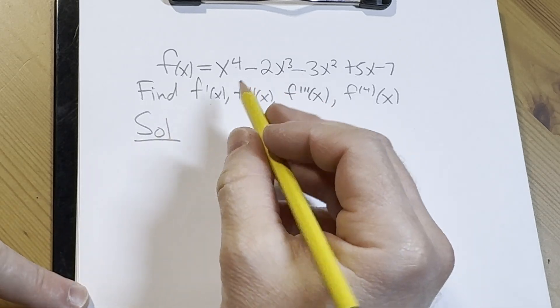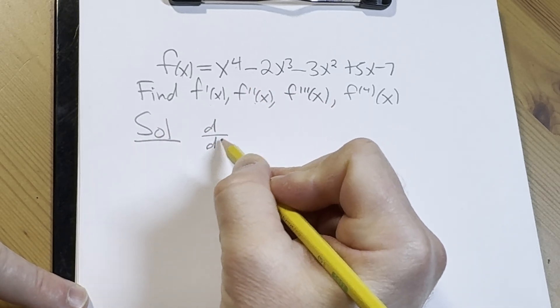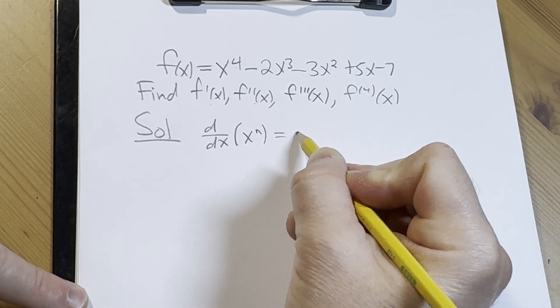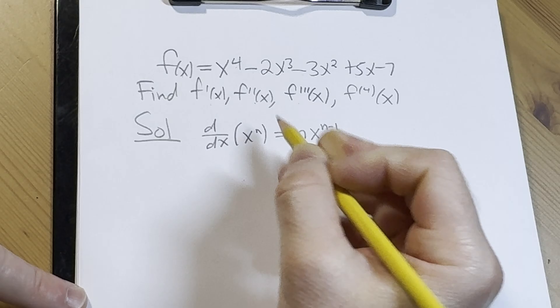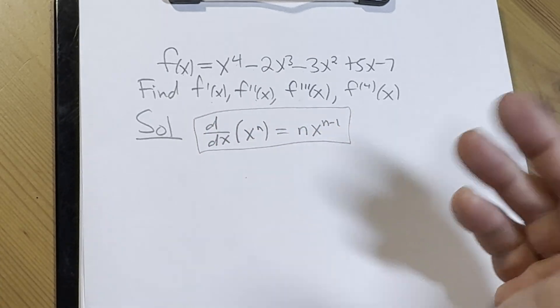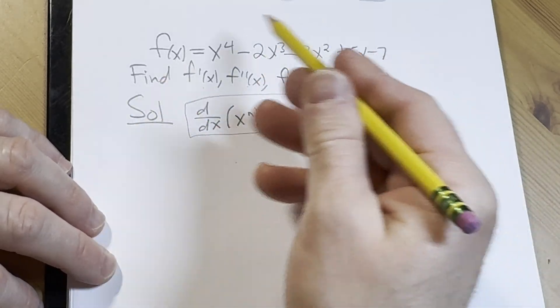So to find all the derivatives of this function we're going to use a simple rule called the power rule, which says if you take the derivative with respect to x of x^n, you simply bring down the n and subtract 1 from the exponent. This is called the power rule from calculus. And the derivative of a constant is 0, so we're going to use these rules to do this.